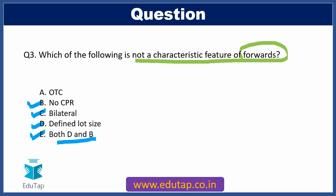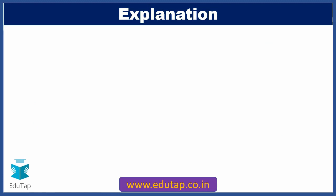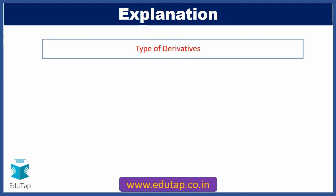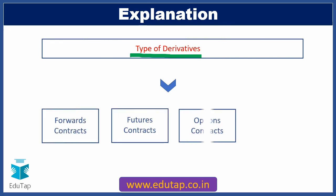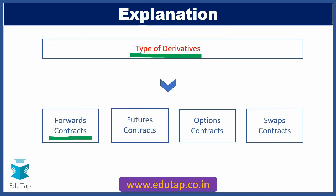This question comes from the derivatives topic of the finance syllabus. Knowing the full forms of OTC and CPR will be vital to solve it. There are four major categories of derivatives: forward contracts, futures contracts, options contracts, and swaps contracts. This question pertains to forward contracts. Let's learn about the basic characteristics of forward contracts.